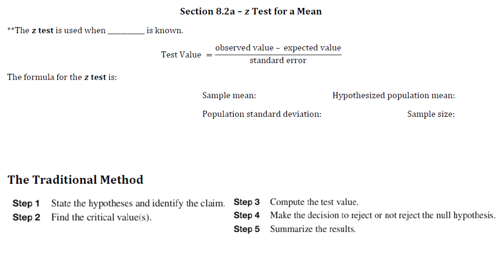There are two different tests that are used for means or averages, and the one we're going to learn about first is called the Z test. The Z test is used whenever sigma is known. Remember, sigma stands for the population standard deviation. If they give you that specifically in the question, then you know you're going to use a Z test.